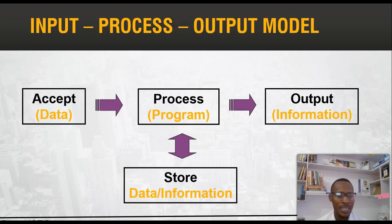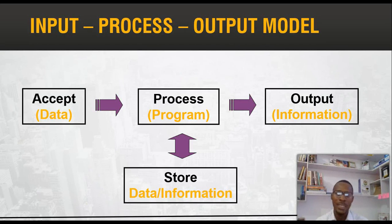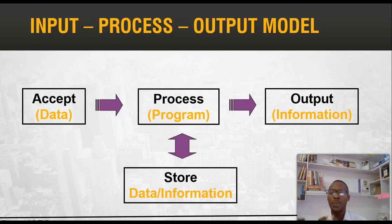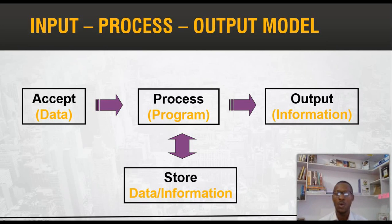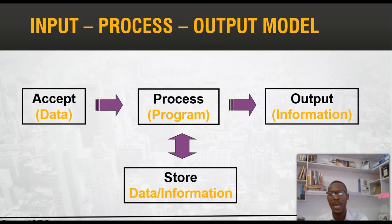We have a simple input-process-output model. The computer can accept data through an input device, which can be our keyboard or mouse. These data can then be manipulated by the processing unit. This unit has three categories: we have the control unit, which coordinates all the activities of a computer system; we have the arithmetic and logic unit, which handles all the arithmetic operations in the system; and we also have the memory, which works in tandem with the processing system to help store data being used. After data has been processed, we get the desired output from output devices like our monitor, or a hard copy from our printer.